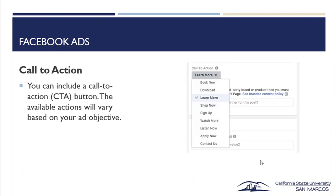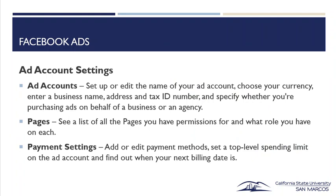Your call-to-action button. Facebook has a dropdown with options like book now, download, learn more, shop now, sign up, watch more, listen now, apply now, and contact us — it makes it pretty easy. For ad account settings, you can set up or edit the name of your ad account, choose your currency, enter a business name, address and tax ID number, and specify whether you're purchasing ads on behalf of a business or an agency. You can see a list of all pages you have permission for, add or edit payment settings, set a spending limit, and find out when your next billing date is — it's once a month.